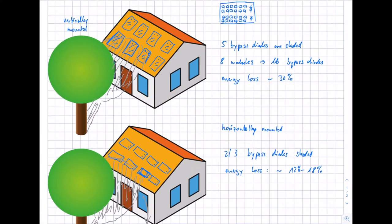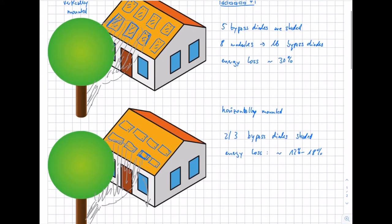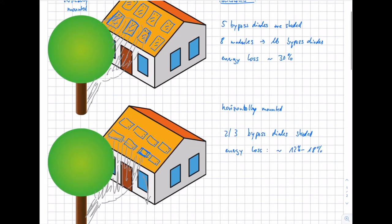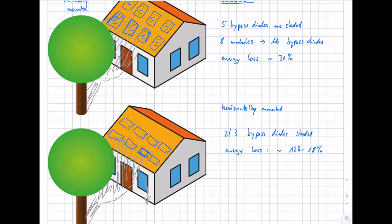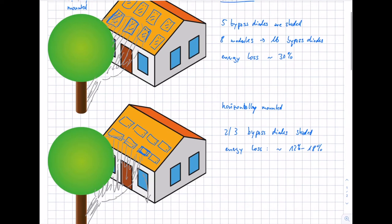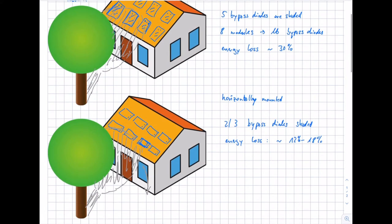In the first case, with non-optimal vertical mounting, we have higher losses from the tree shadow. In the second case, we reduced the losses by about half just by turning the modules around. This is very important: you can improve the energy yield by optimization — thinking about the best mounting orientation, and perhaps not installing a module that might be highly covered by shadow from a chimney, for example.